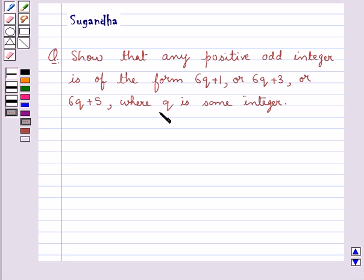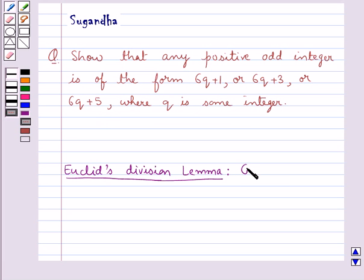First let's see what Euclid's division lemma is. Given positive integers A and B, there exist unique integers Q and R